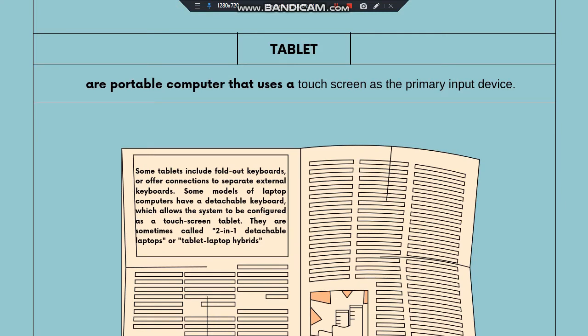Next is the tablet. Tablets are portable computers that use a touchscreen as a primary input device. Some tablets include fold-out keyboards or offer connection to separate external keyboards. Some models of laptop computers have detachable keyboards which allows the system to be configured as a touchscreen tablet. They are sometimes called 2-in-1 detachable laptops or tablet-laptop hybrids.